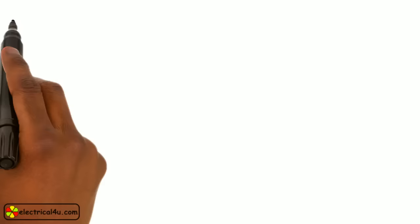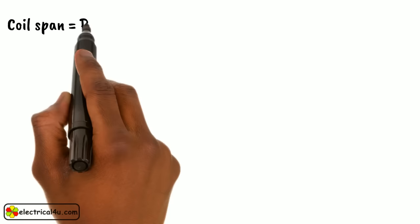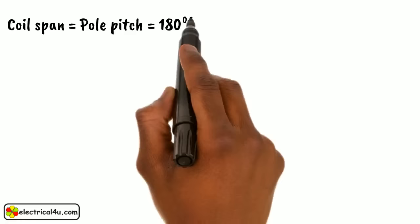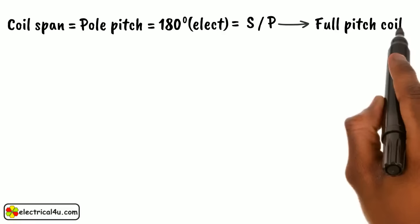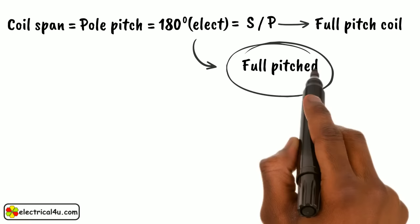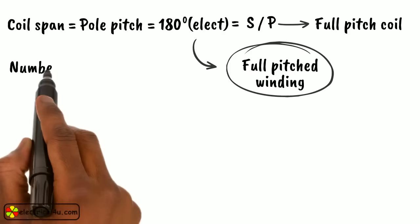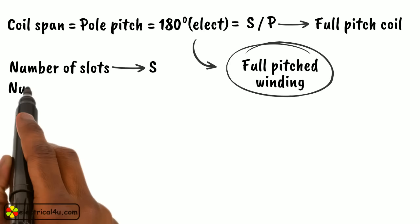If the coil span is equal to one pole pitch, that is 180 degree electrical, or the number of slots per pole s by p, then it is called a full pitch coil and the complete winding is called as full pitch winding. Here, s is the number of slots and p is the number of poles in the machine.